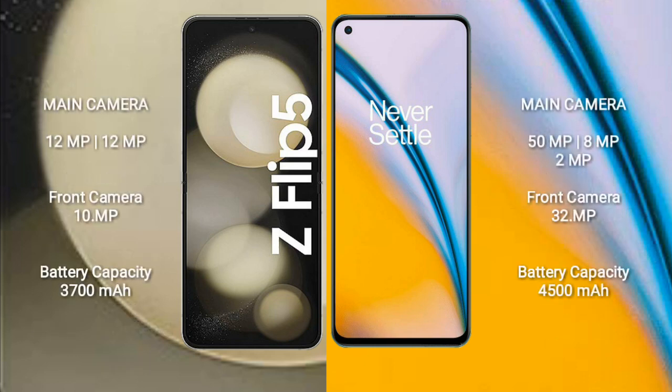Samsung Galaxy Z Flip 5 has a rear dual camera setup of 12MP plus 12MP and a 10MP front camera. OnePlus Nord 2 has a rear dual camera setup of 50MP plus 8MP plus 2MP and a 32MP front camera.